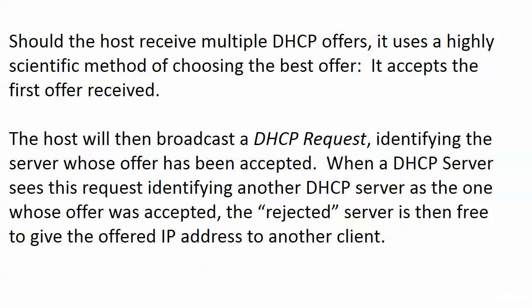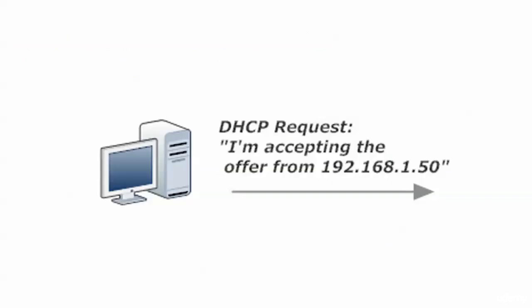The host then broadcasts another packet called a DHCP request. The offer the host just received has important information, but it's not going to have everything the host needs to get started. By broadcasting this DHCP request, the packet identifies the server whose offer has been accepted. The accepted server sees the broadcast and says it needs to send more information and will reserve that IP address. The other server sees it and says it's been rejected, so it returns that IP address to the pool to give to someone else. The DHCP request lets all servers that made offers know which one was accepted and tells the others to return their addresses to the pool.